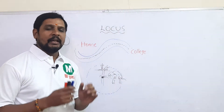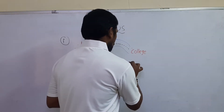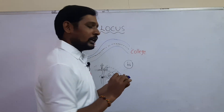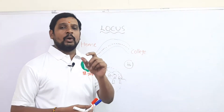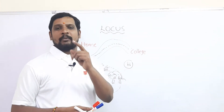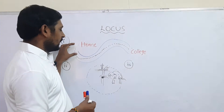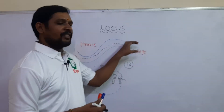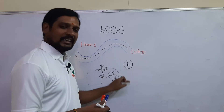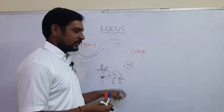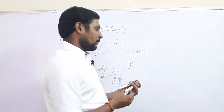Now I am coming to the mathematical example. Until now I haven't given the definition of locus — after this example I am going to reveal it. What we said is the path from home to college, or the cow which moved around a tree, is called locus. Now coming to the third example, which is related to mathematics.